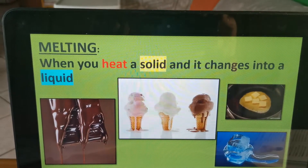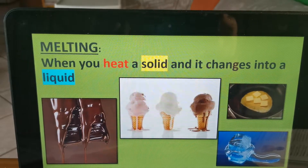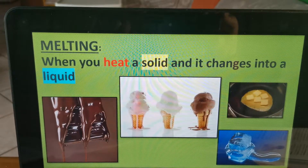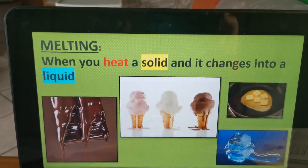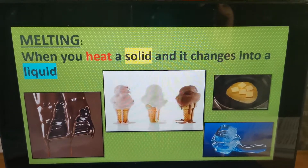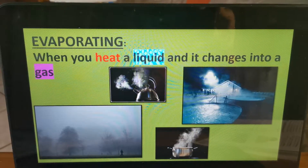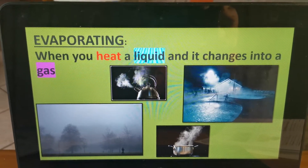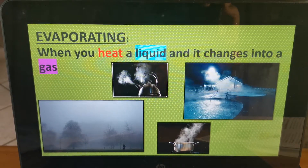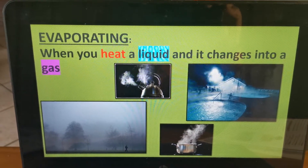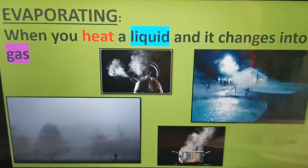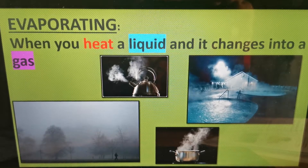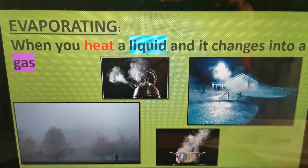And ice — what happens to ice if you put it in the sun? It will melt, because the ice gains heat and it changes into a liquid. So let's move on to evaporation. Evaporation is when a liquid changes into a gas. What do you have to do to make that liquid change into a gas? You have to add some heat. So if a liquid gains heat, it will change into a gas.